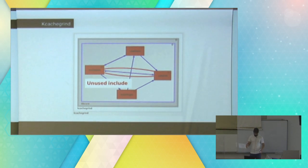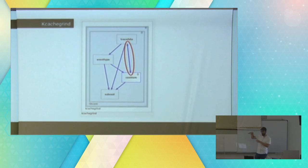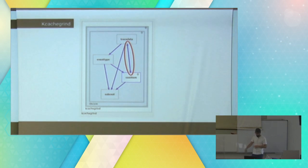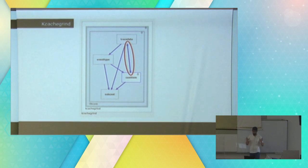You can then filter out everything else and see only that particular cycle you're trying to solve. Let's get rid of the unused include one — those two images are for the same thing. In the first example, I just removed the dummy unused include. And I want to proceed to inspect why the other cycle is going on.